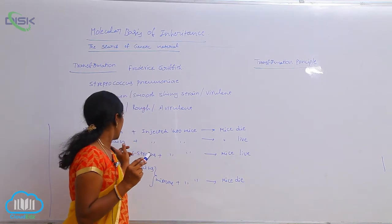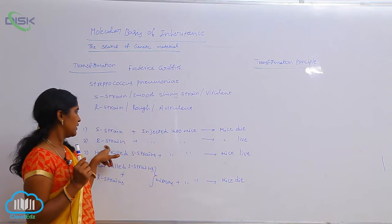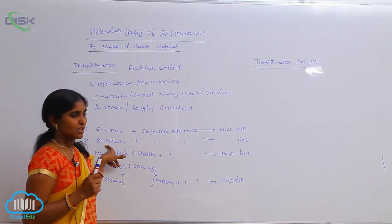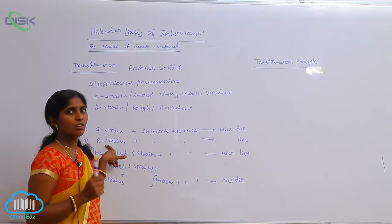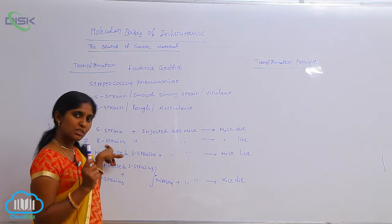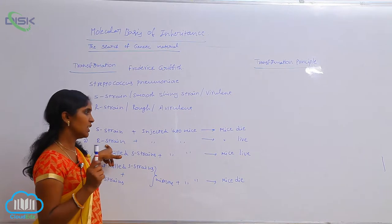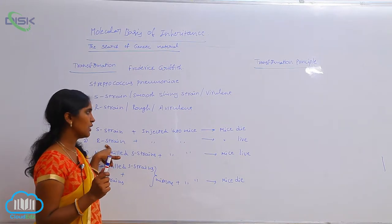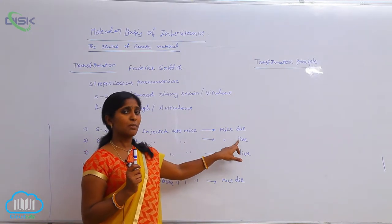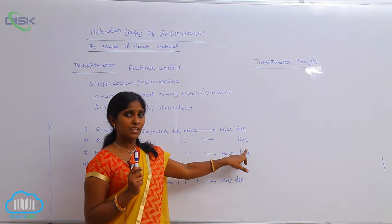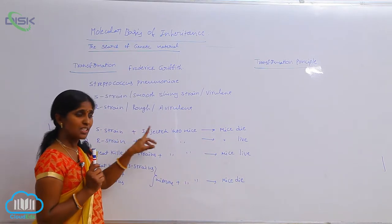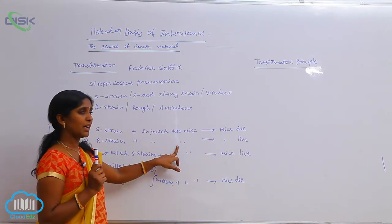Next, he conducted the experiment using the R strain. Since the R strain is already avirulent, in the presence of the R strain in the mice body, the mice did not die — they remained healthy and clean.